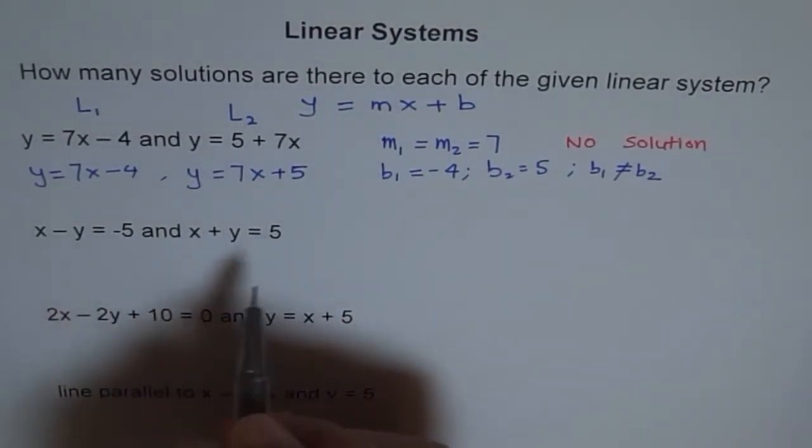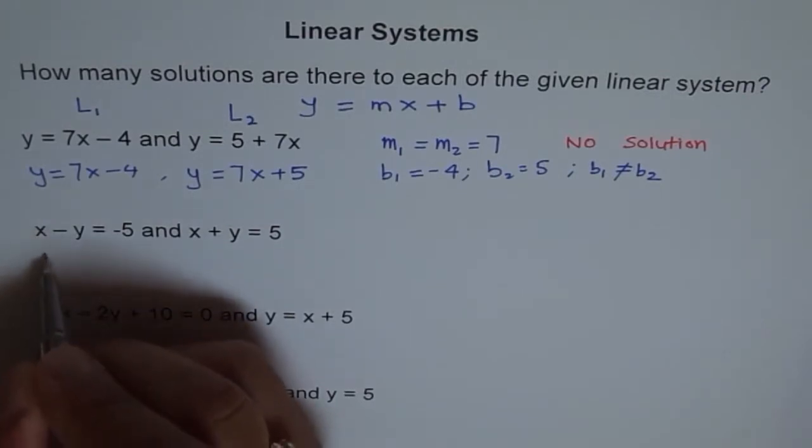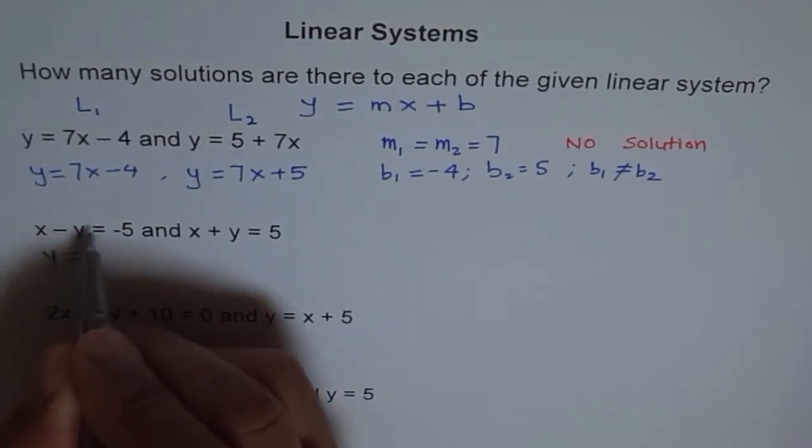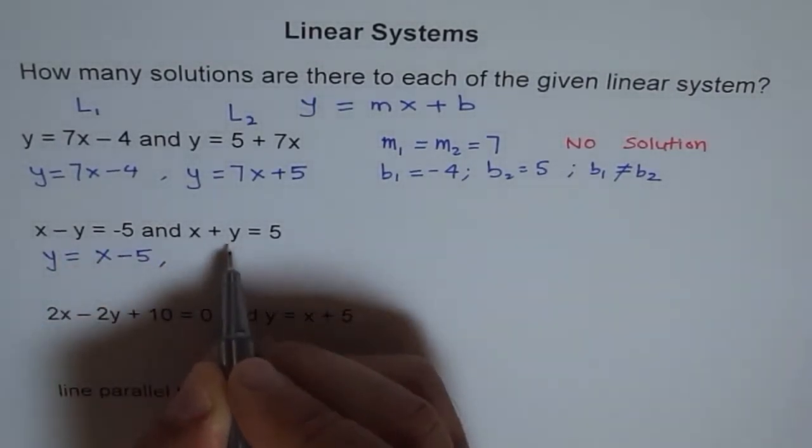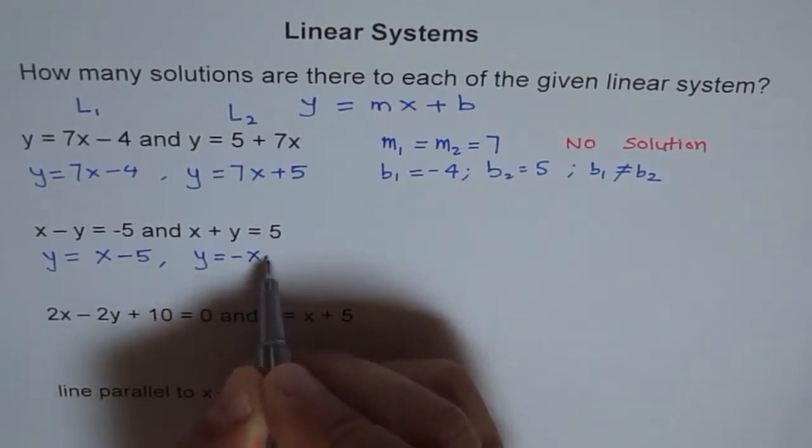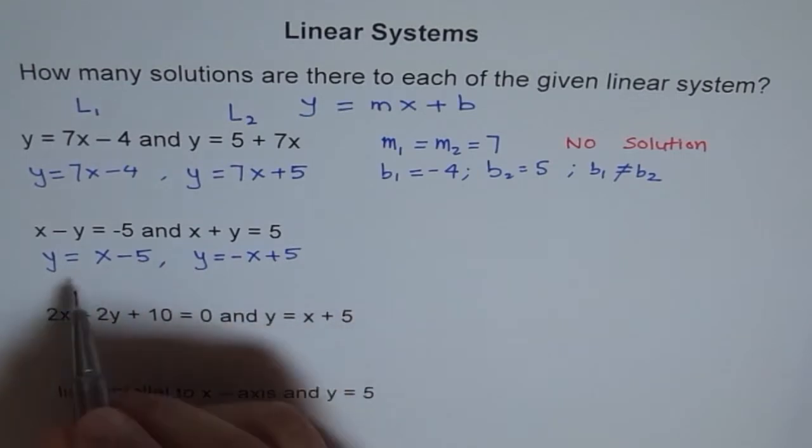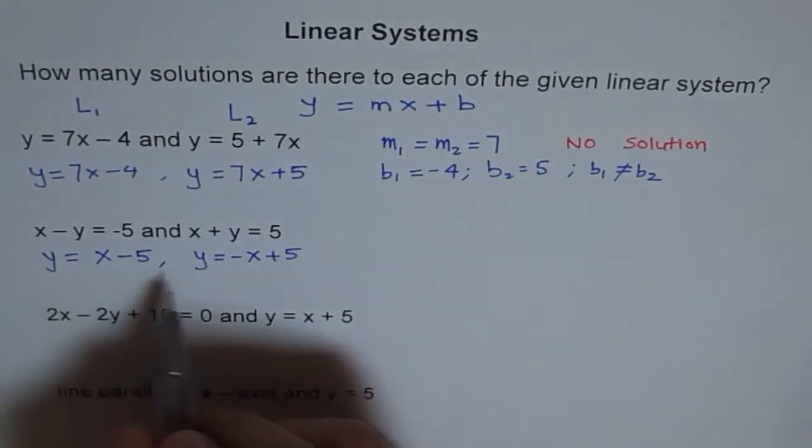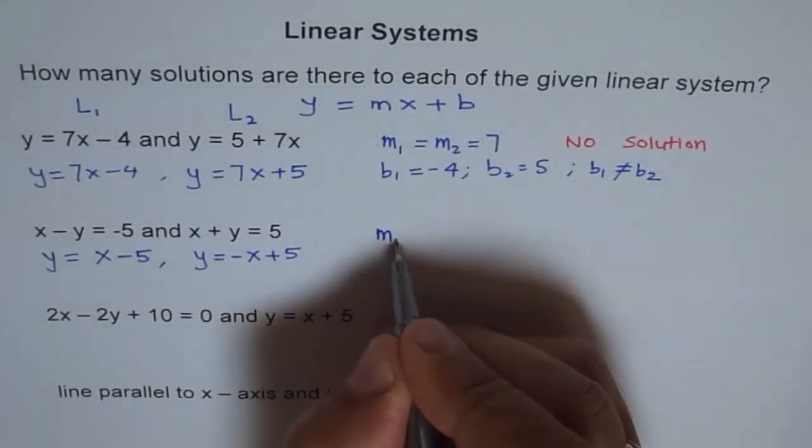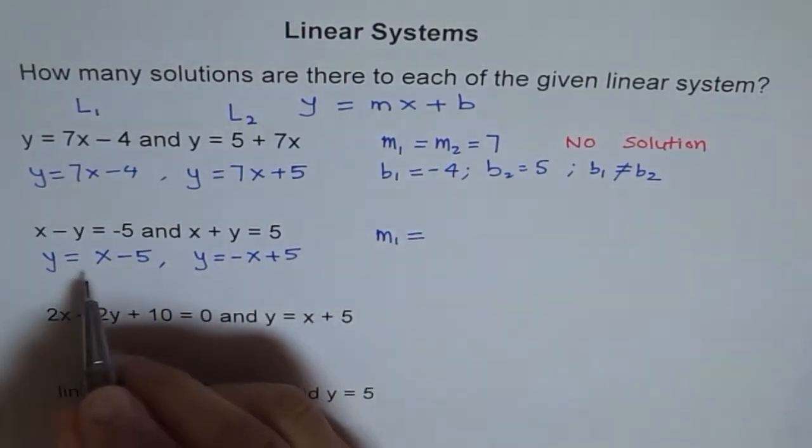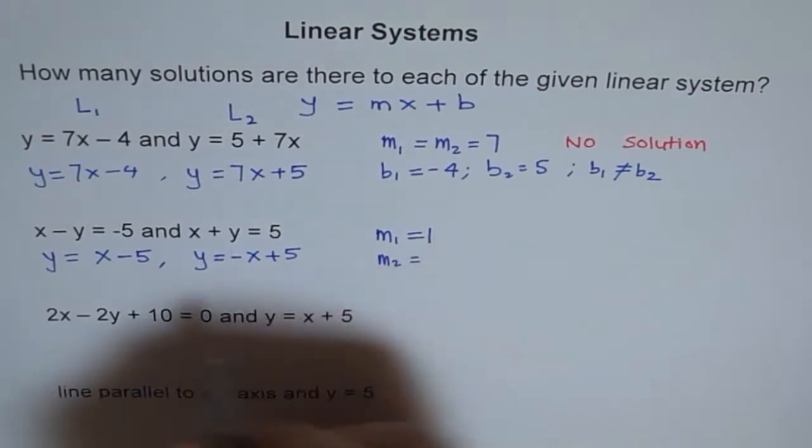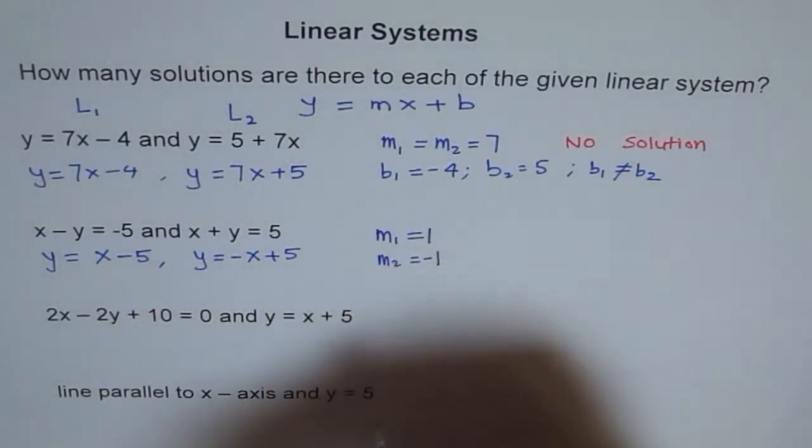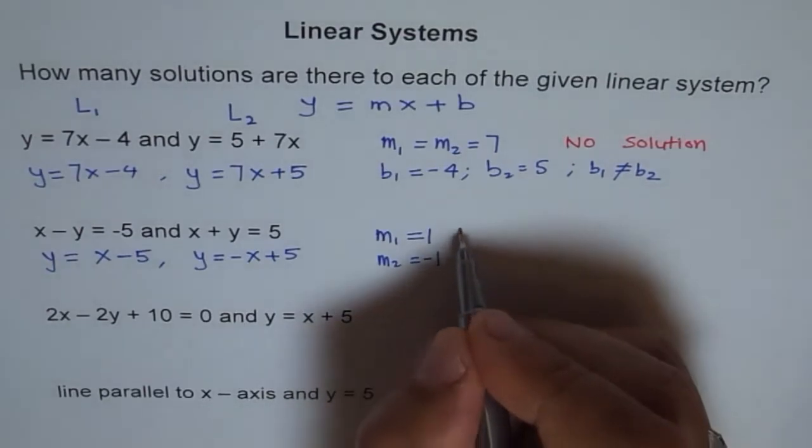Let us do the same thing here. You can write this line as y equals to x minus 5. And you can isolate y here and you can write y equals to minus x plus 5. Here slopes are different. What are slopes? M1 is equal to 1, and m2 is equal to minus 1. Do you see that? So they are different.